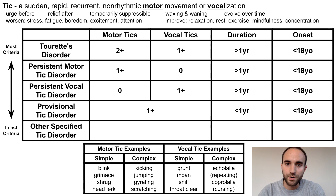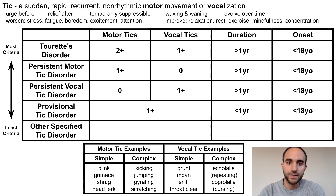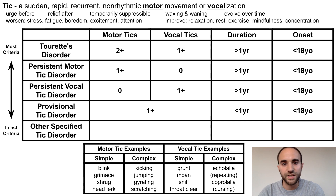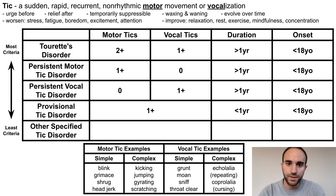Provisional tick disorder is a bit different. This diagnosis is used when the patient has at least one tick of either motor or vocal type, but the ticks have not yet lasted for at least one year. Therefore, this designation can be used as a placeholder early on in the disease course, and can be replaced with one of the more specific tick disorders after a longer period of observation.